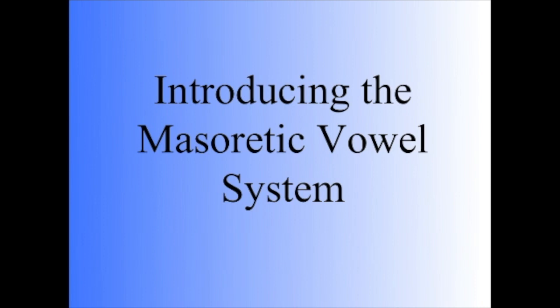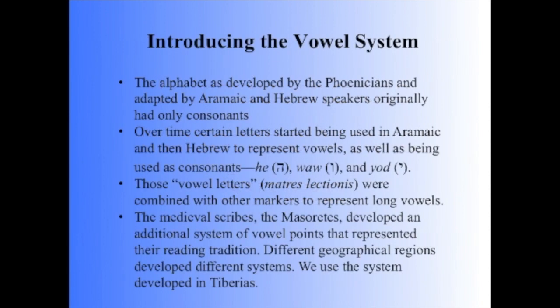In this video, you will be introduced to the Masoretic vowel system as used in the Hebrew Bible. The alphabet, as developed by the Phoenicians and then later adapted by Aramaic and Hebrew speakers, originally had only consonants. Over time, certain letters started being used in Aramaic and then Hebrew to represent vowels, as well as being used as consonants.